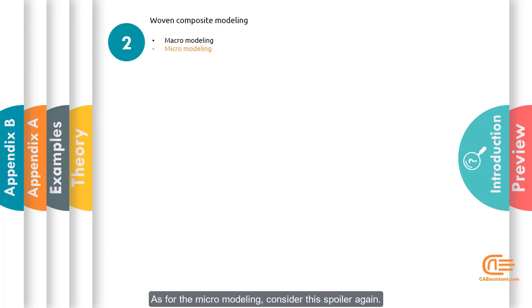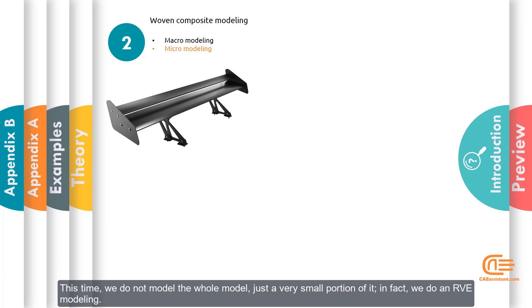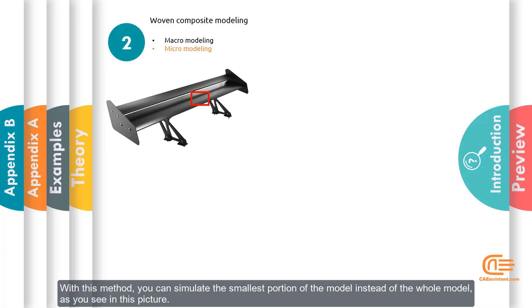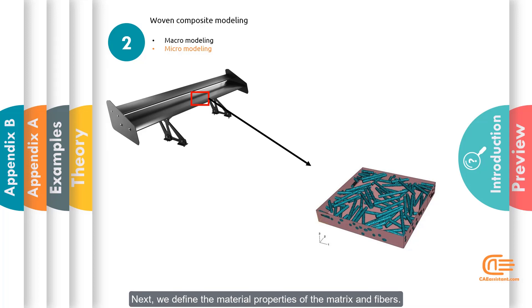As for the micro modeling, consider this spoiler again. This time, we do not model the whole model, just a very small portion of it. In fact, we do an RVE modeling, the smallest volume that could represent the whole volume properties. With this method, you can simulate the smallest portion of the model instead of the whole model. You must model the matrix and fibers separately and then assemble them to create the RVE of your model. Next, we define the material properties of the matrix and fibers. In this package, we will do the macro modeling.